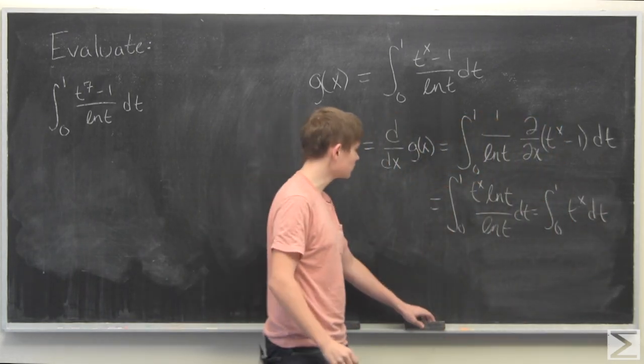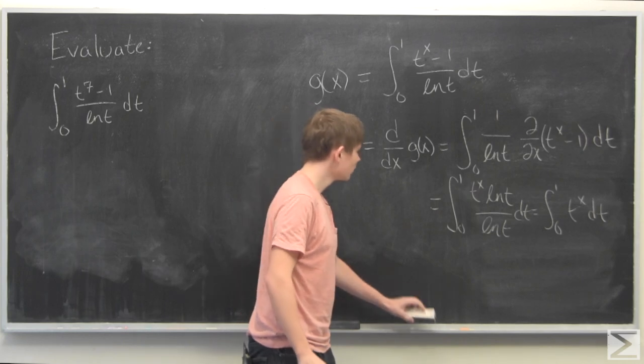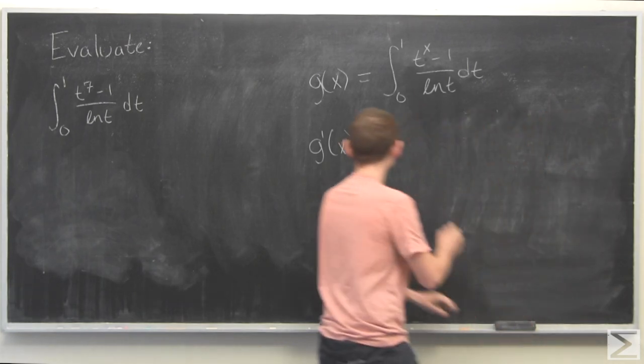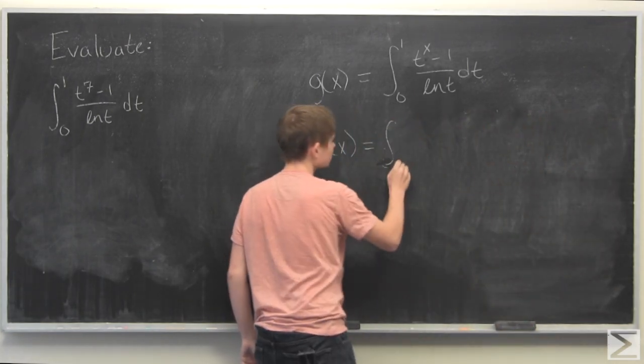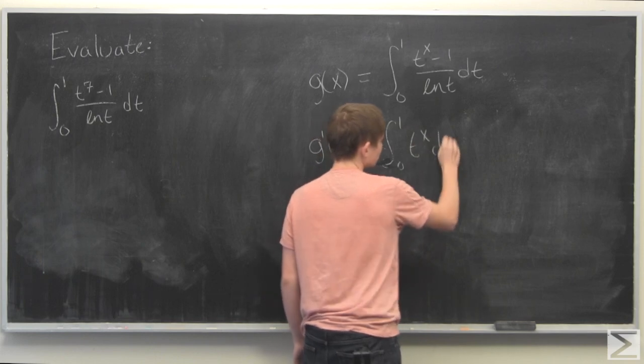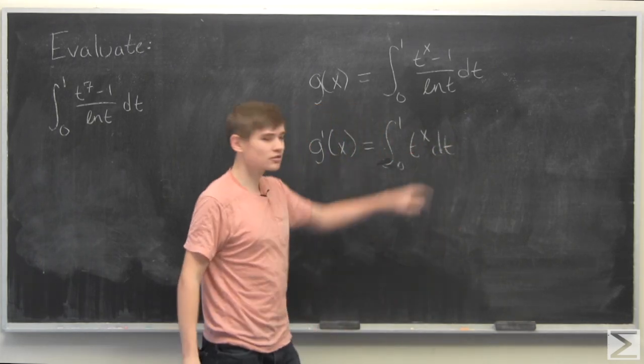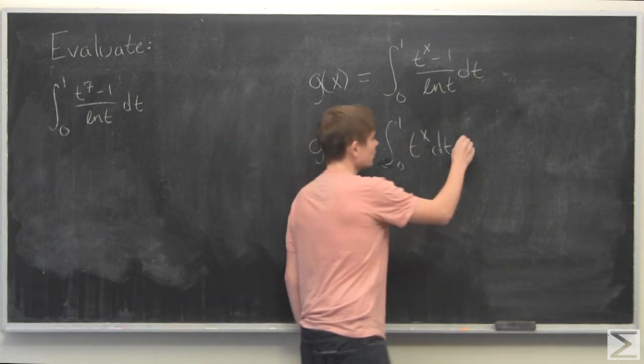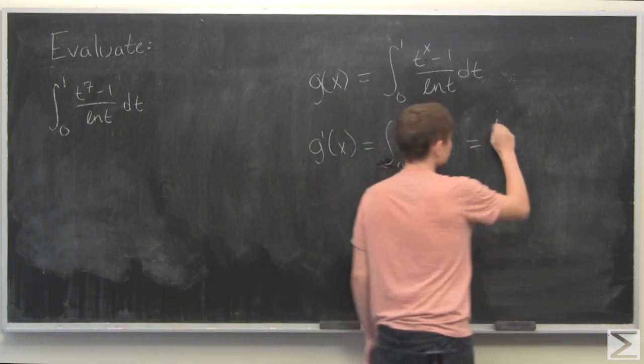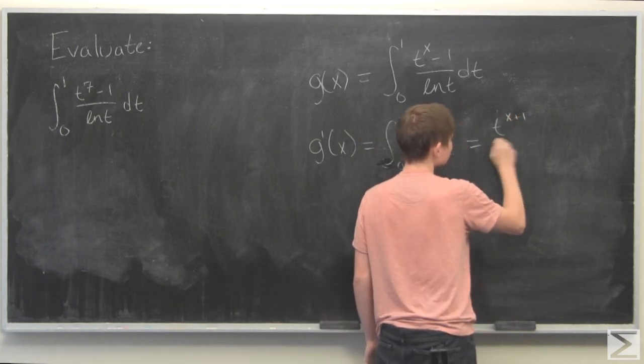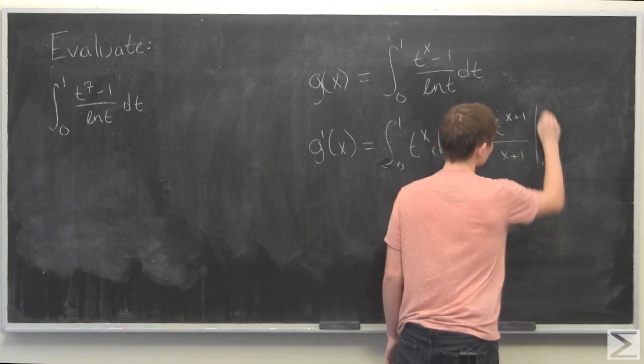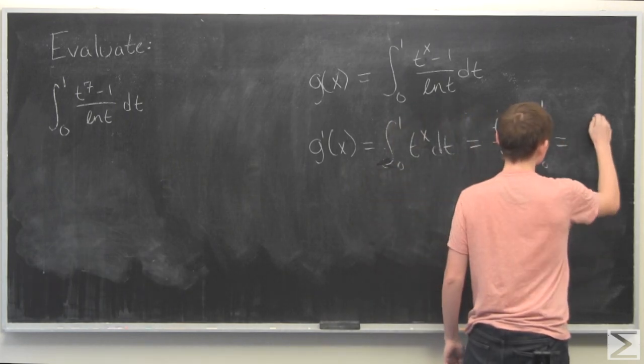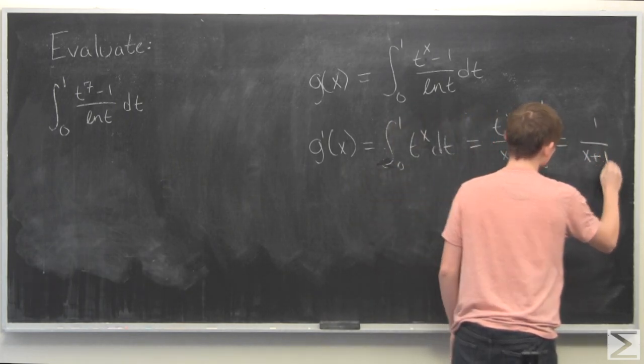That's pretty simple to do. So we have the integral from 0 to 1 of t to the exponent x. Since x in this case is just a number for this integral, we find that this is equal to t to the x plus 1 over x plus 1 evaluated at 1 and 0, which just becomes 1 over x plus 1.